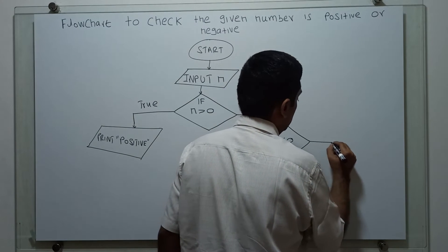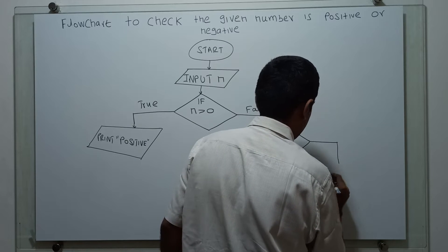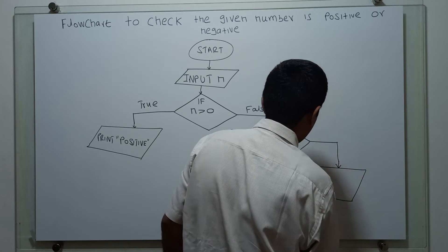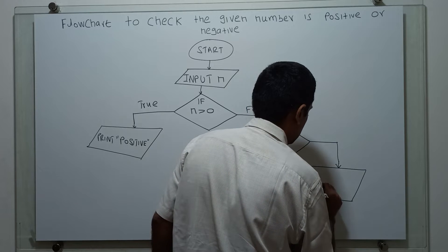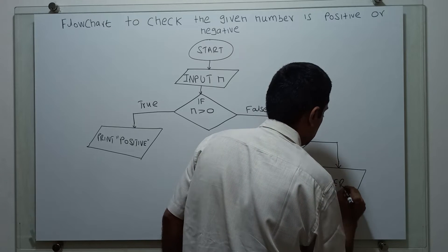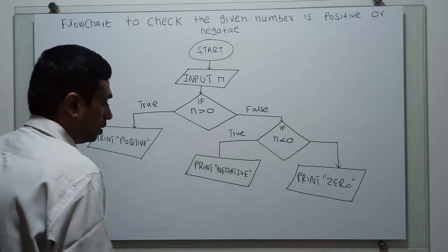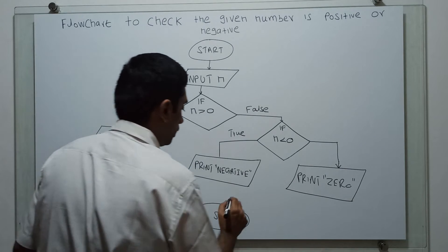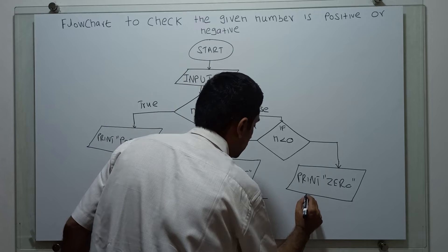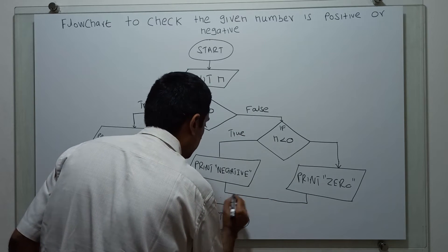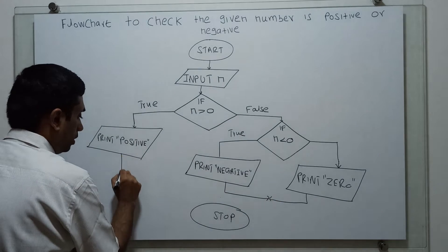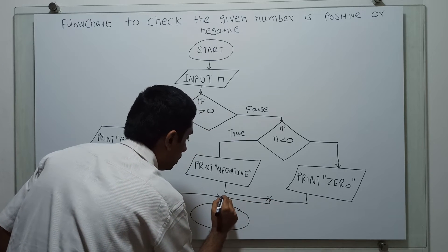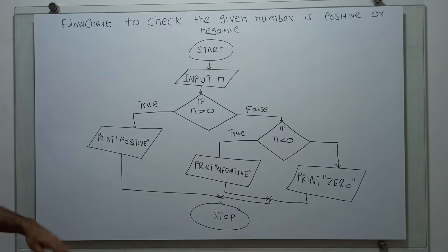If n less than 0 is also false, we print 0. This is the logical end of the flowchart — the stop. I am connecting the lines towards the stop. This is the false flow.